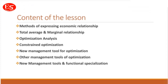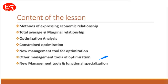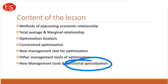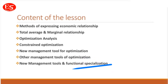The first part covers methods of expressing economic relationships. Next, we discuss the total, average, and marginal relationships. This is followed by optimization analysis, then constraint optimization, and finally three interrelated parts: new management tools of optimization, other management tools of optimization, and the functional specialization of these new management tools.